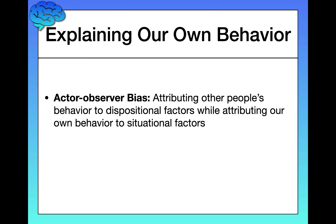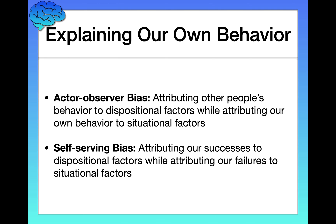We only appeal to the situation when explaining our own failures or mistakes. When explaining our successes, we say it's all about us — our disposition. For example, 'I earned a great grade on this exam because I'm intelligent,' not because the exam was extremely easy. This is called the self-serving bias because it is self-serving.